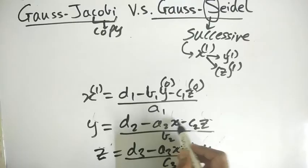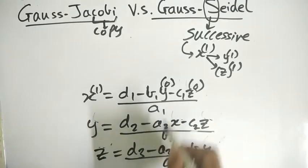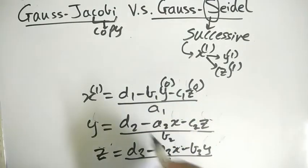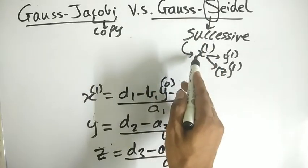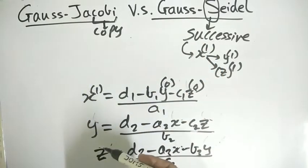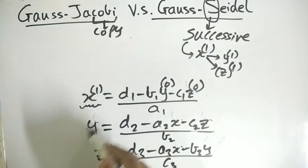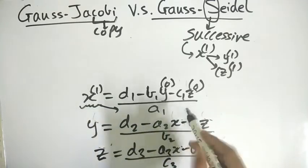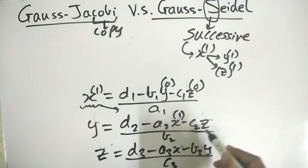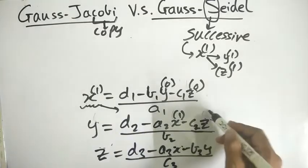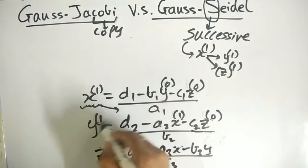We use the initial values of y and z to get this x1. Now, instead of using the x0 here, because Jacobi says we need to copy, but Gauss-Seidel says if you get this, then use this. Why use x0? You get a new value for x, put this here. So put it here: x1. But we don't have a new value of z, so we will use 0 only. This will give me y1.